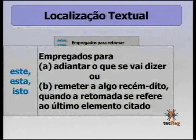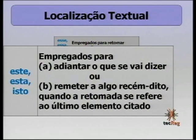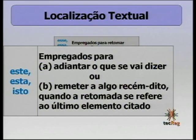O terceiro uso dos pronomes demonstrativos é quando a localização é dentro do próprio texto. Use 'esse', 'essa' ou 'isso' para retomar um elemento que já foi dito. Use 'este', 'esta' ou 'isto' em duas situações: para adiantar algo que ainda vai ser dito, ou para se referir a algo dito num espaço de tempo mais próximo — como o último elemento de uma enumeração.